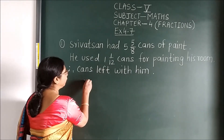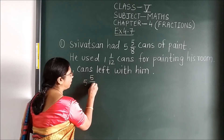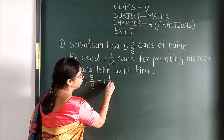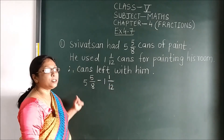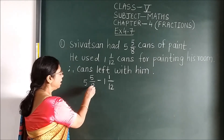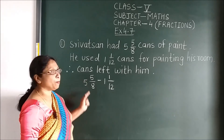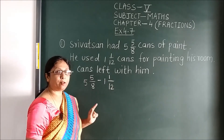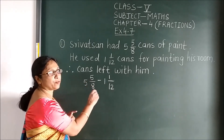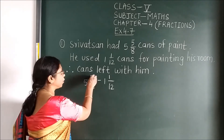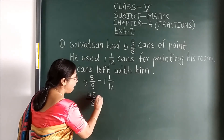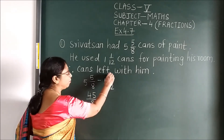So first you write 5 and 5/8 minus 1 and 1/12. Now first you have to make this in proper fraction form. 5 and 5/8 becomes 45/8, and 1 and 1/12 becomes 13/12. Now the denominators are different, so when denominators are different, you will find the LCM.